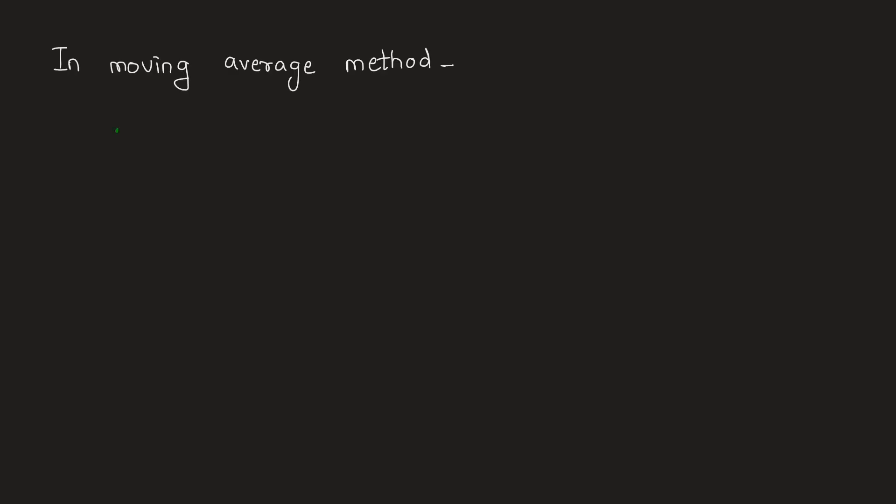Let's find out. From the given options, the moving average method is the one in which a fresh average is calculated at the end of each period. While calculating this fresh average, actual demand data for the most recent period is added and the data for the older period is deleted.